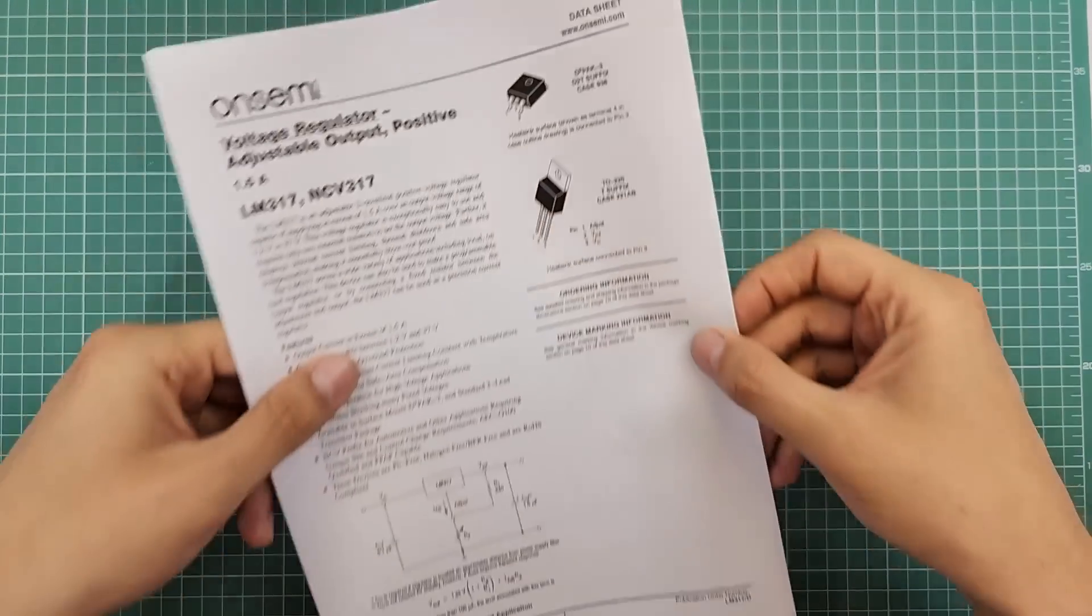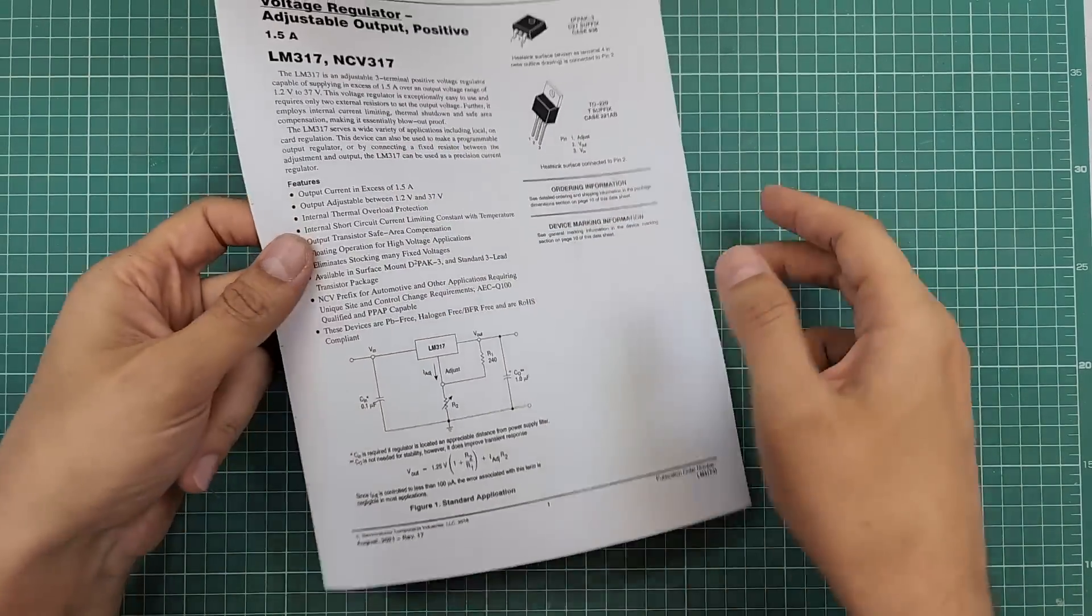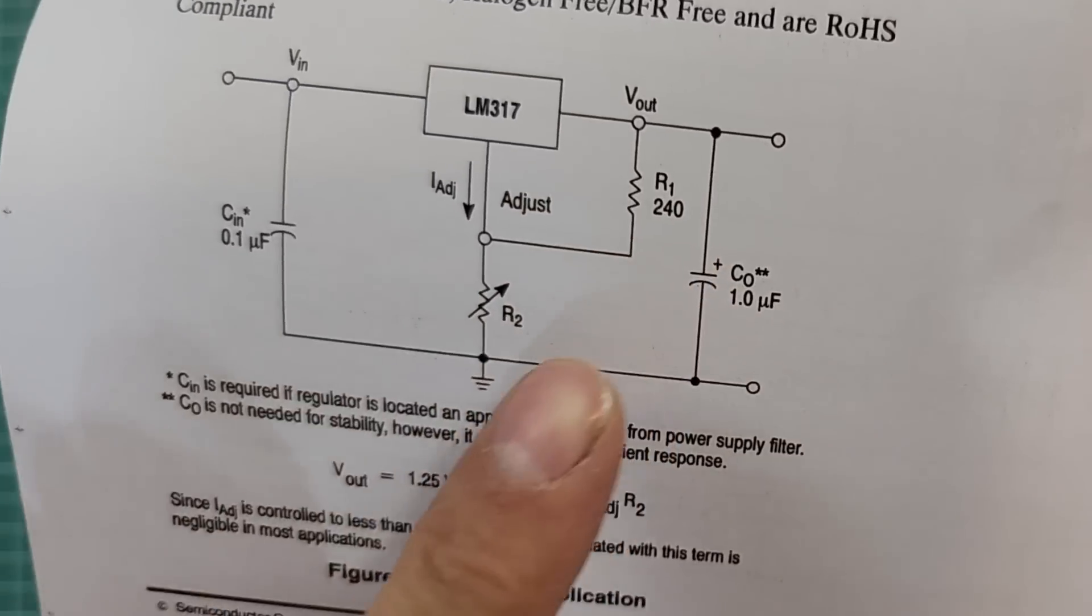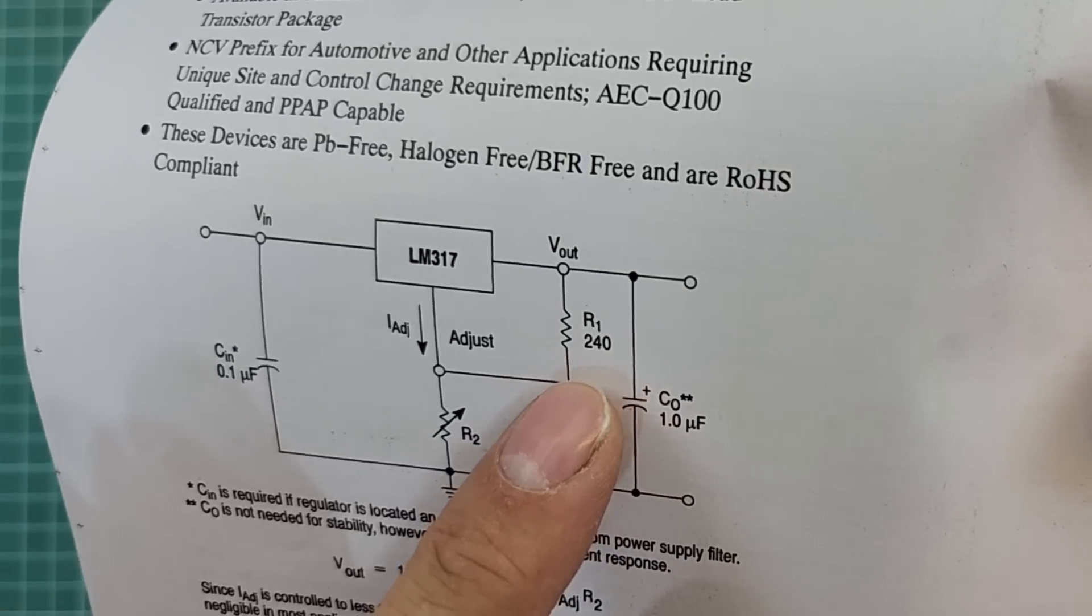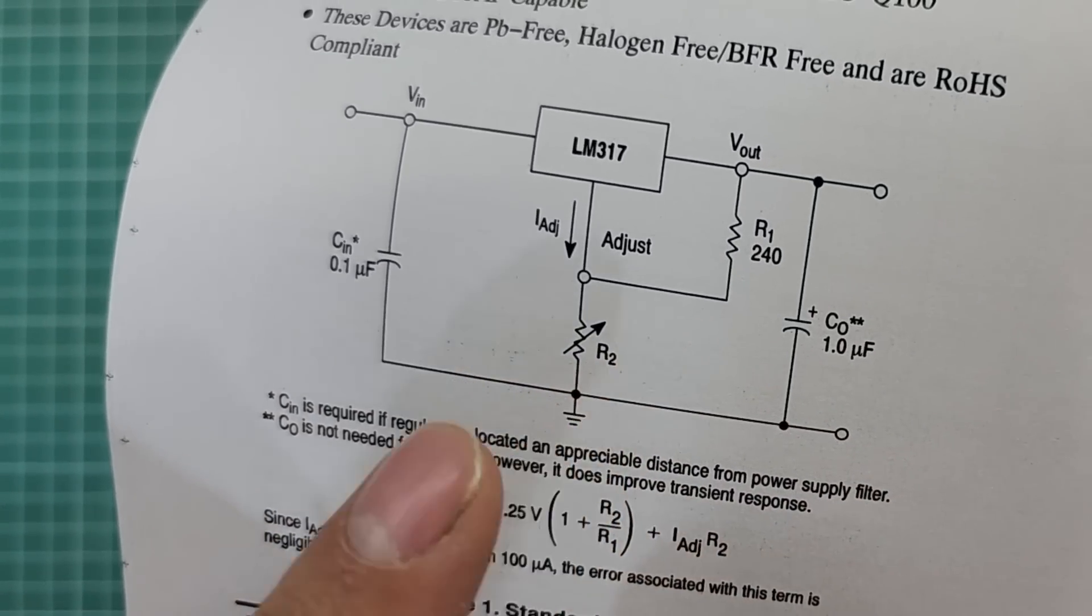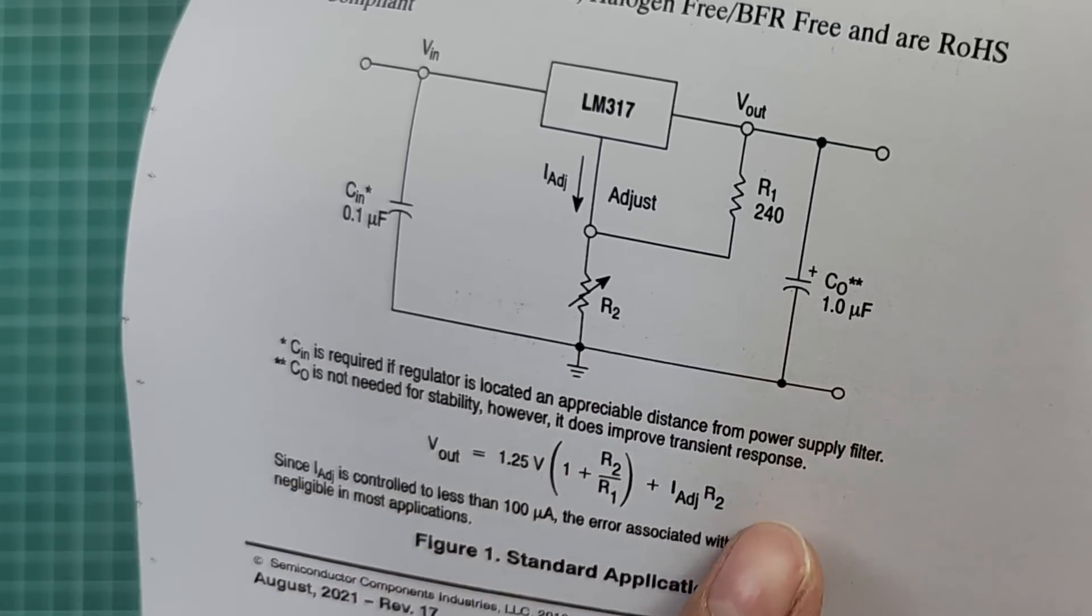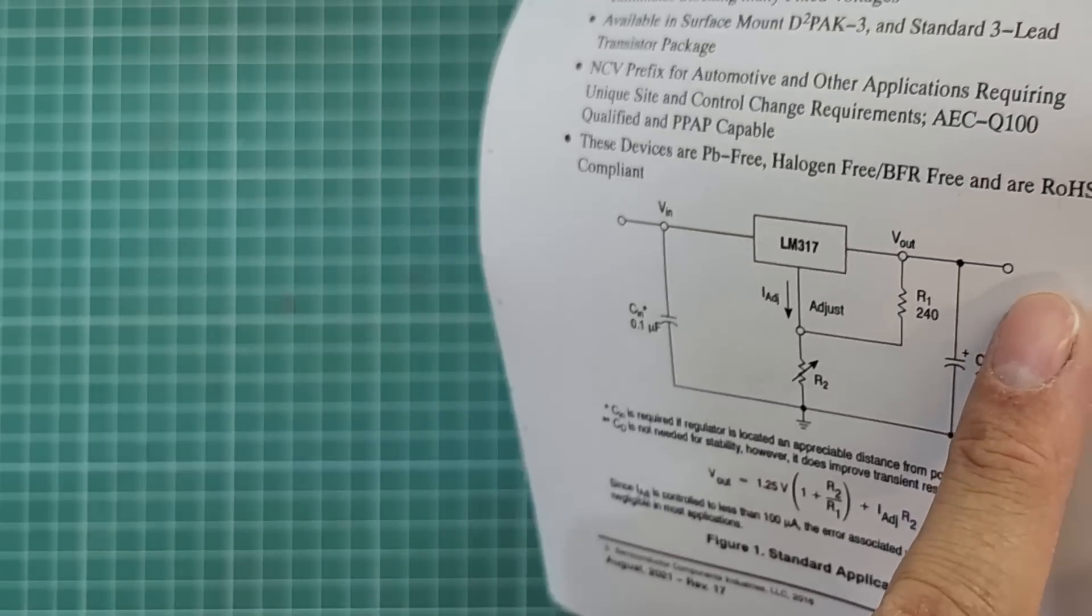This is the datasheet for LM317. Look at this basic circuit here. There are two resistors here, R1 and R2. R1 is a fixed value resistor which is equal to 240 ohms, and R2 is a variable resistor. You can change the value of R2 by using this formula to make your desired voltage at output. Of course, the output voltage can't be higher than the input voltage.